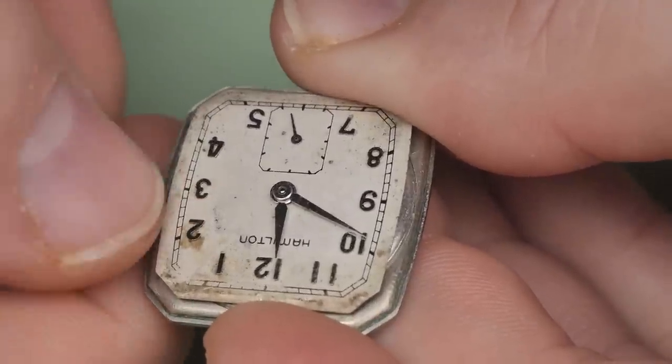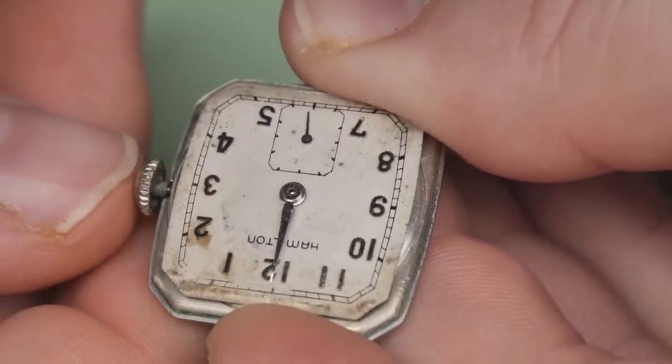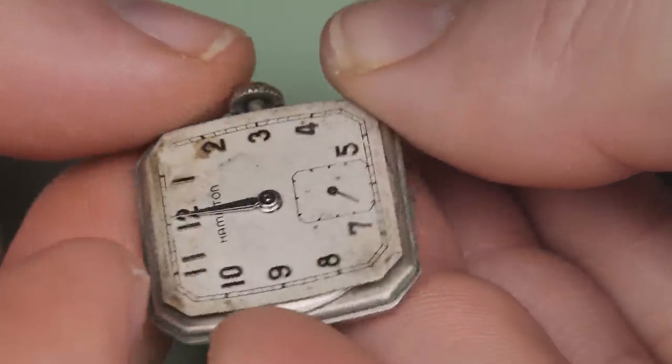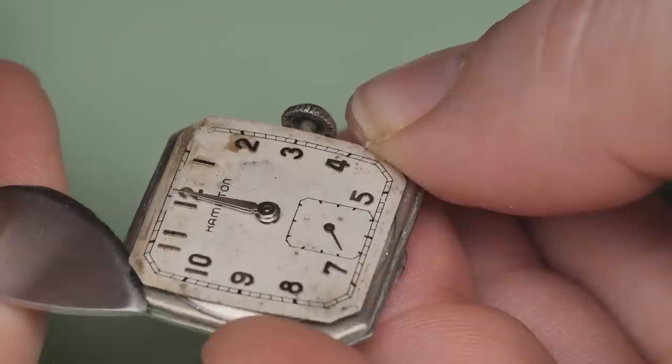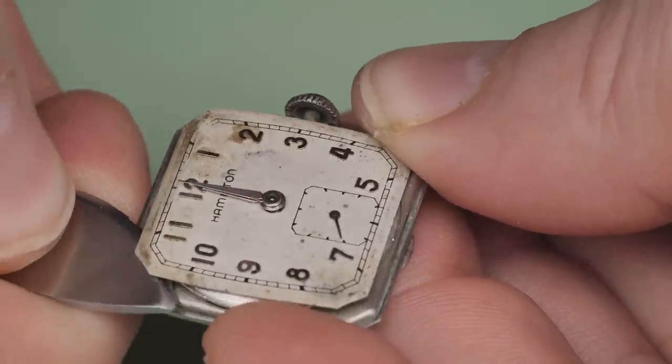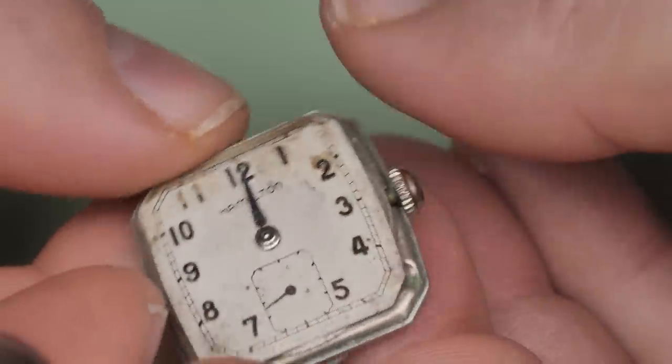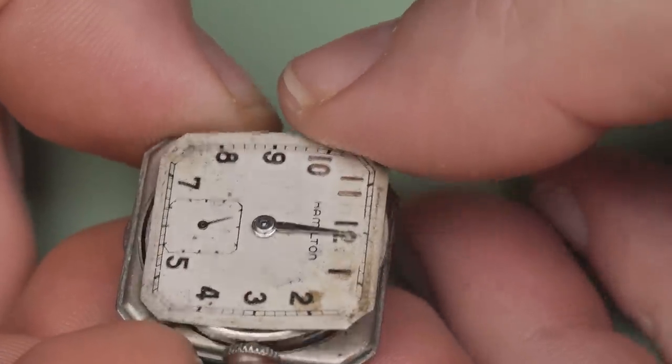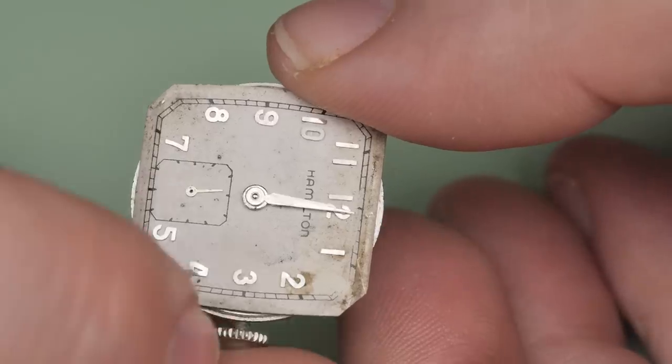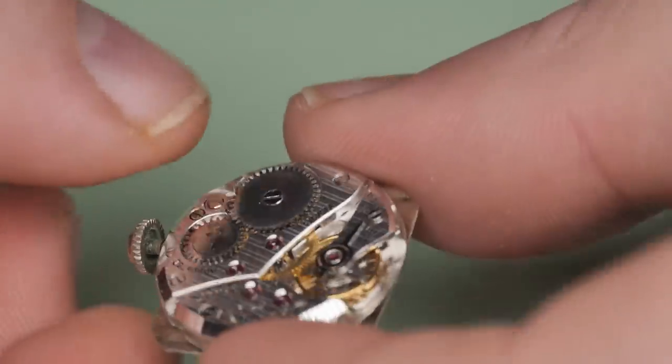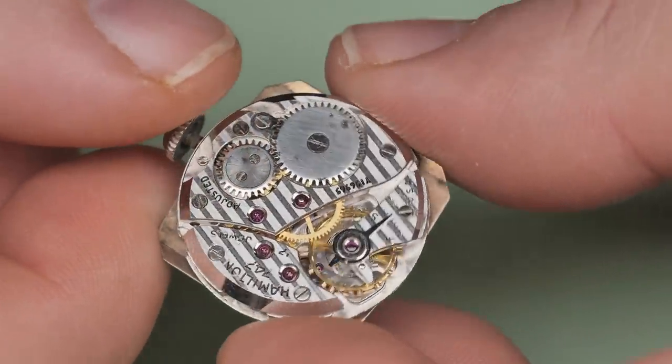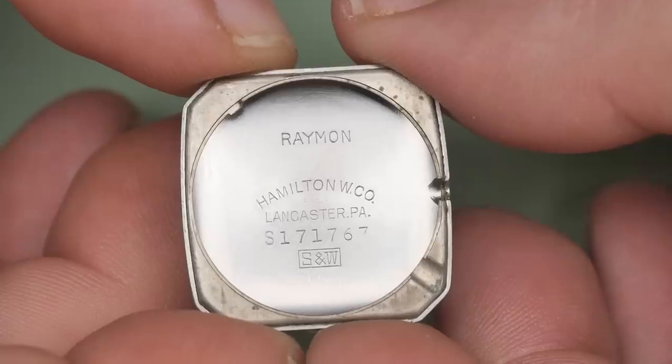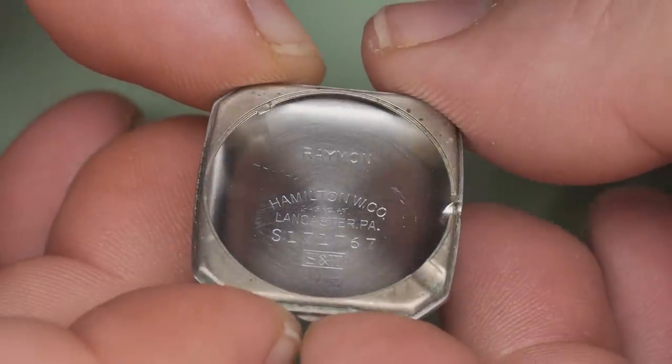I'm setting the time to 12 o'clock so I can remove the handset later. The movement is essentially pressure fit into the case back. Using a case knife, I can gently pry the dial and movement loose from the case back. I don't want to pry on just one side since this could bend the dial or snap a dial foot off. I rotate the watch around, prying a little on each corner until the movement is clear of the case back. And there it is, the American-made Hamilton 747. This really is a workhorse movement.